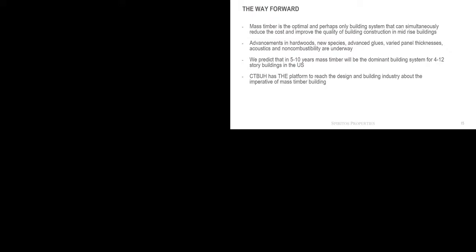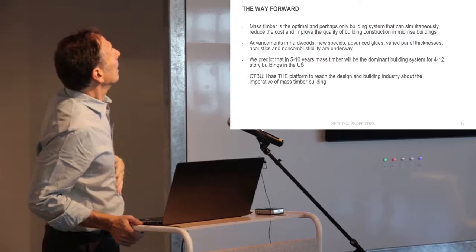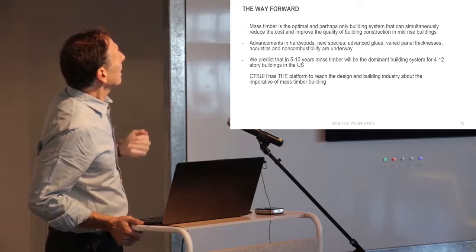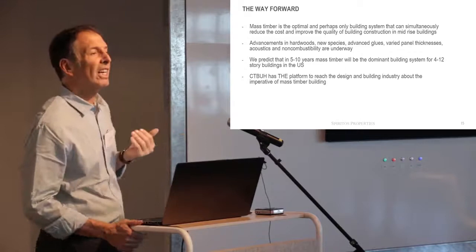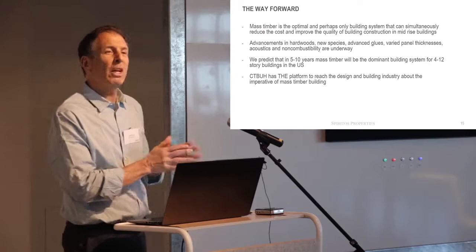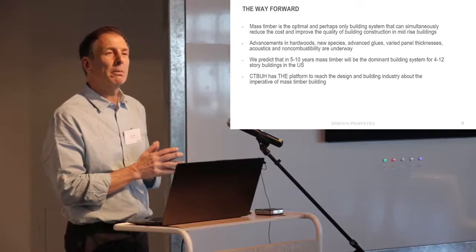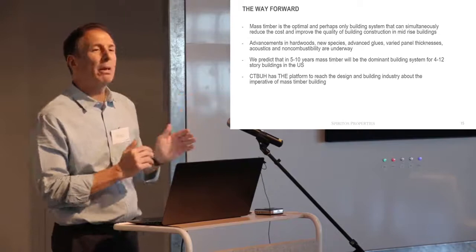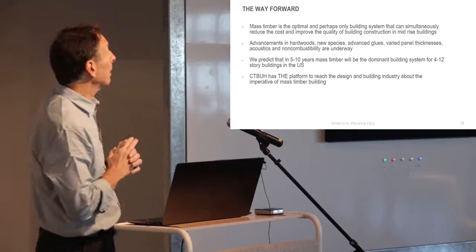So this is the way forward. Mass timber is the optimal and perhaps only system that can improve the quality and reduce the cost of building that all the technological improvements that engineers and researchers are working on, just like at the start of the steel and the start of the concrete age, they will get us to better performing and taller timber buildings. We know that. We're not going backward. There's no fatal flaw in mass timber design, engineering, and building. So 10 years from now, we'll be in a much different place than we are today, and we will see a lot more timber buildings.